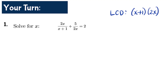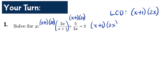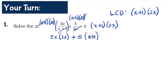We multiply each part of the equation by the LCD (x+1)(2x). For the first fraction, we cancel (x+1), leaving 2x times 2x. For the second fraction, we cancel 2x, leaving 5 times (x+1). For the right side, we have 2 times (x+1) times 2x. Now we apply the distributive property.